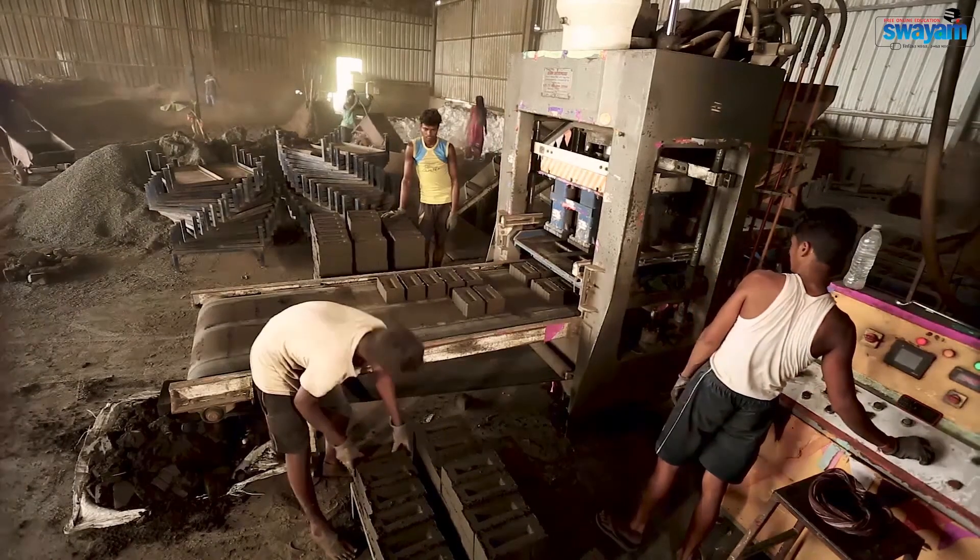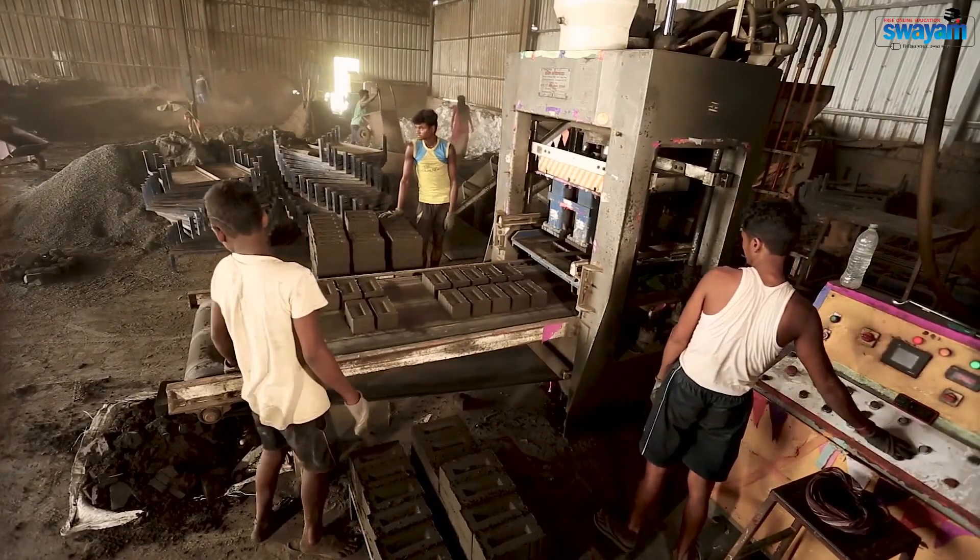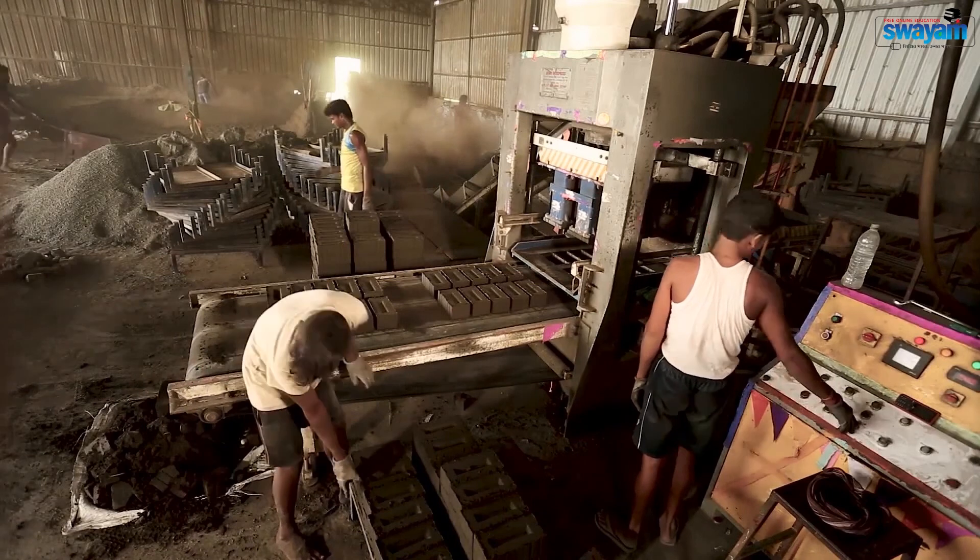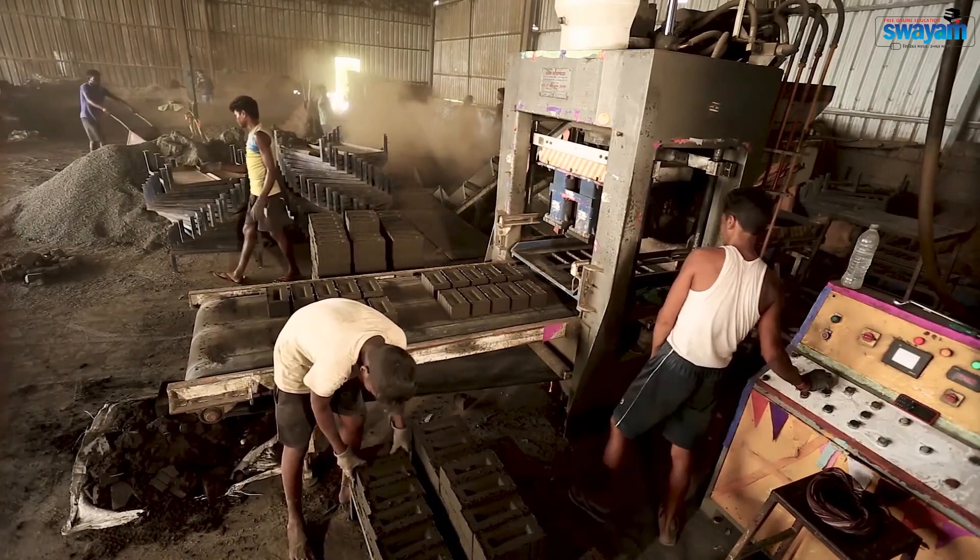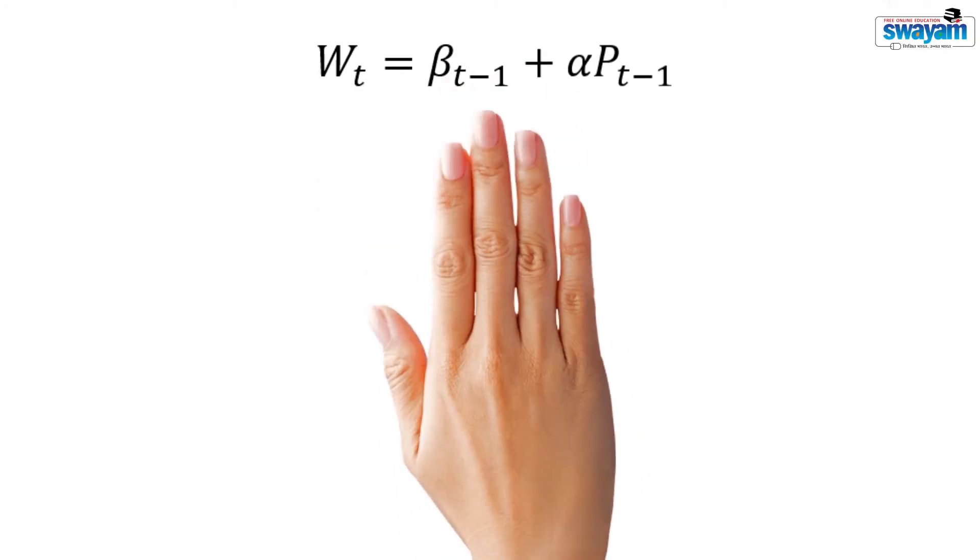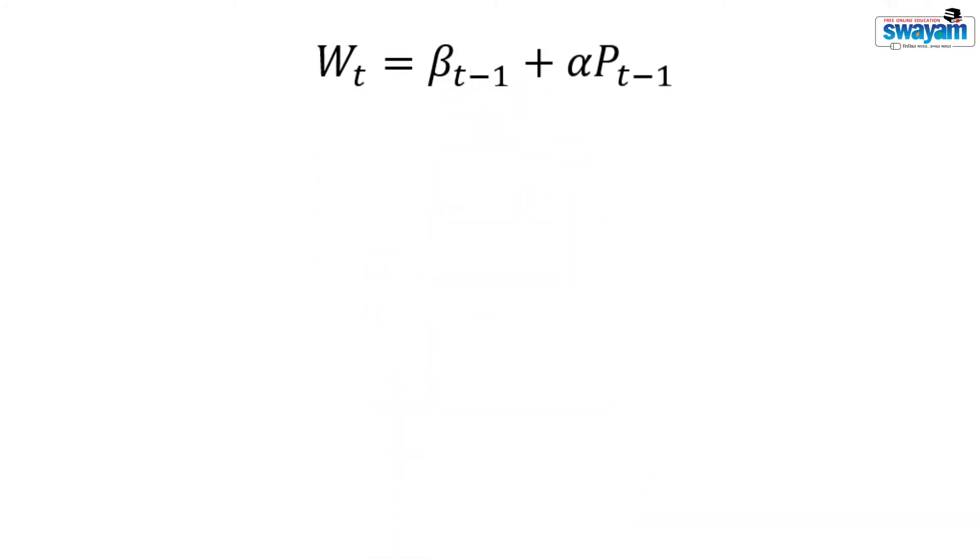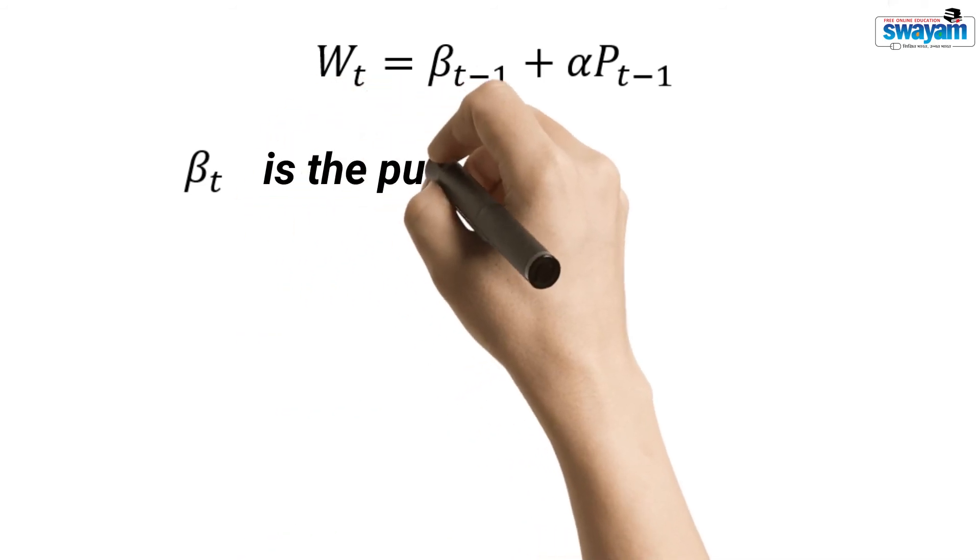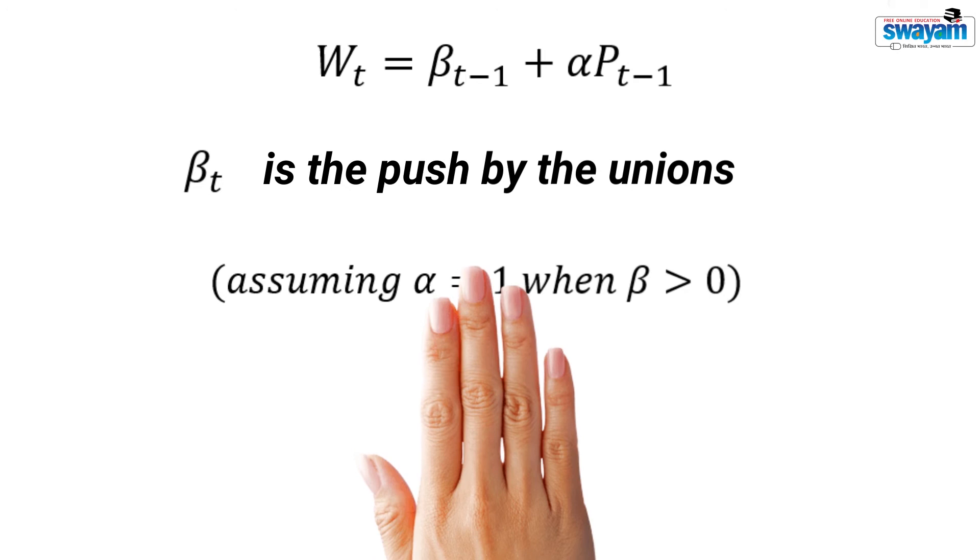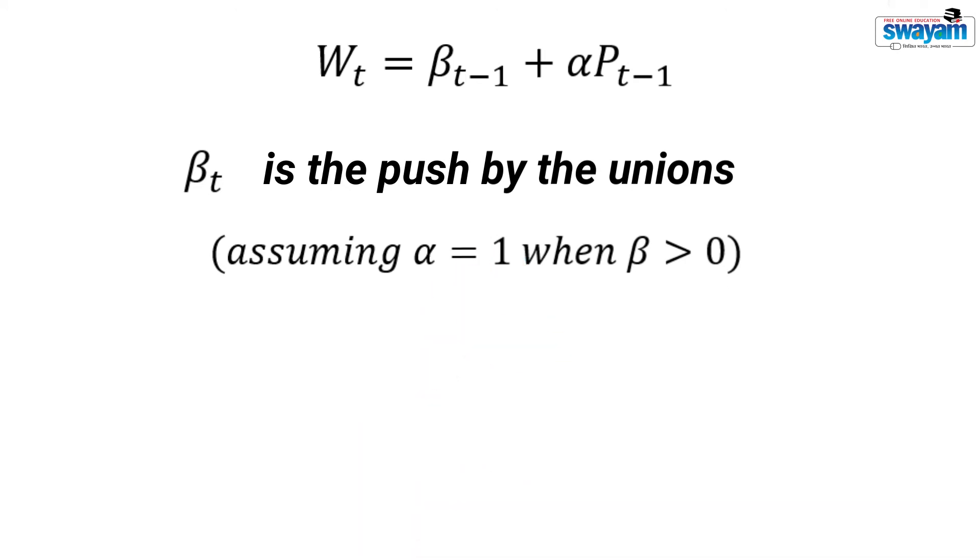If unions are powerful enough to grant an increase in wage, then even if the rate of increase in price is zero, money wages will increase. This situation may be expressed like this. Beta is the push by the unions. If beta is positive, alpha is assumed to be unity.